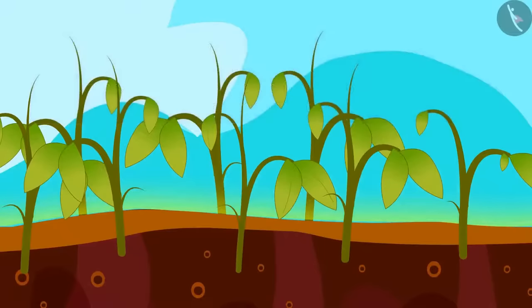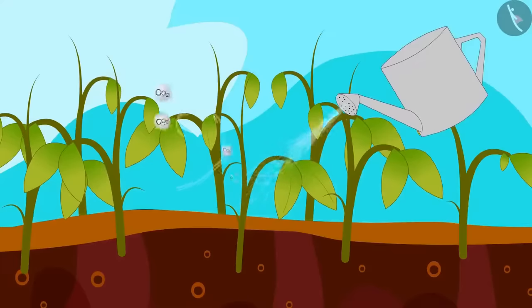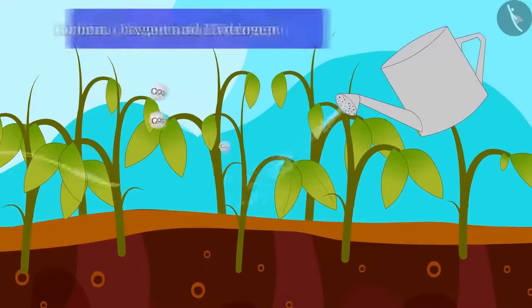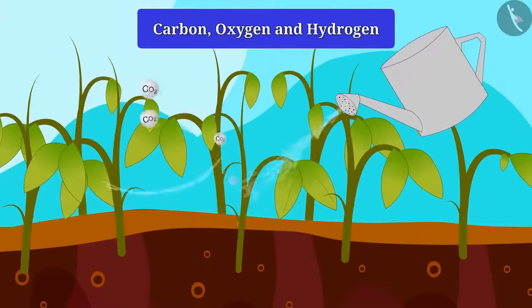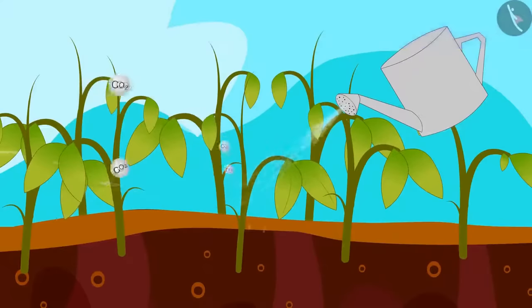Do you know what nutrients the tree gets from air and water? Think. Trees get carbon, oxygen and hydrogen from air and water. All these nutrients help plants to grow.